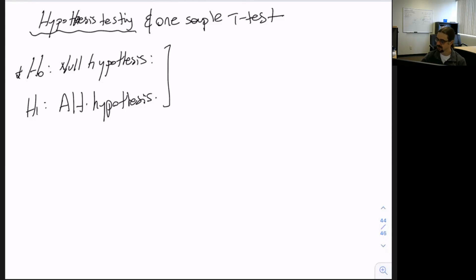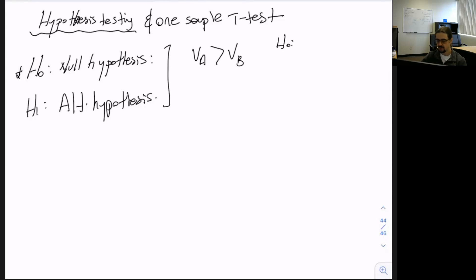If you're testing whether the speed of car A is larger than the speed of car B, then your H0 has to state that the speed is not larger. Therefore your null hypothesis will be vA is smaller than or equal to vB, and your alternative hypothesis becomes what you're testing for: vA is greater than vB.